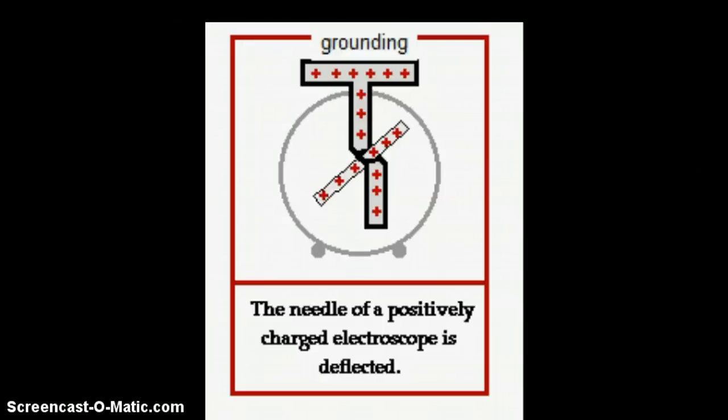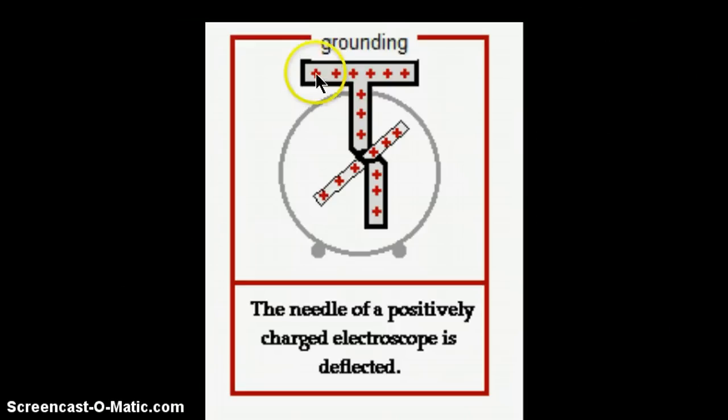This is a quick look at how we ground an object, in this case an electroscope, and what grounding means, and what moves, and where it moves, and what the result is. So here we are starting with the electroscope. It's got a net positive charge, as you can see from the pictures, it's got positive charge built up throughout.